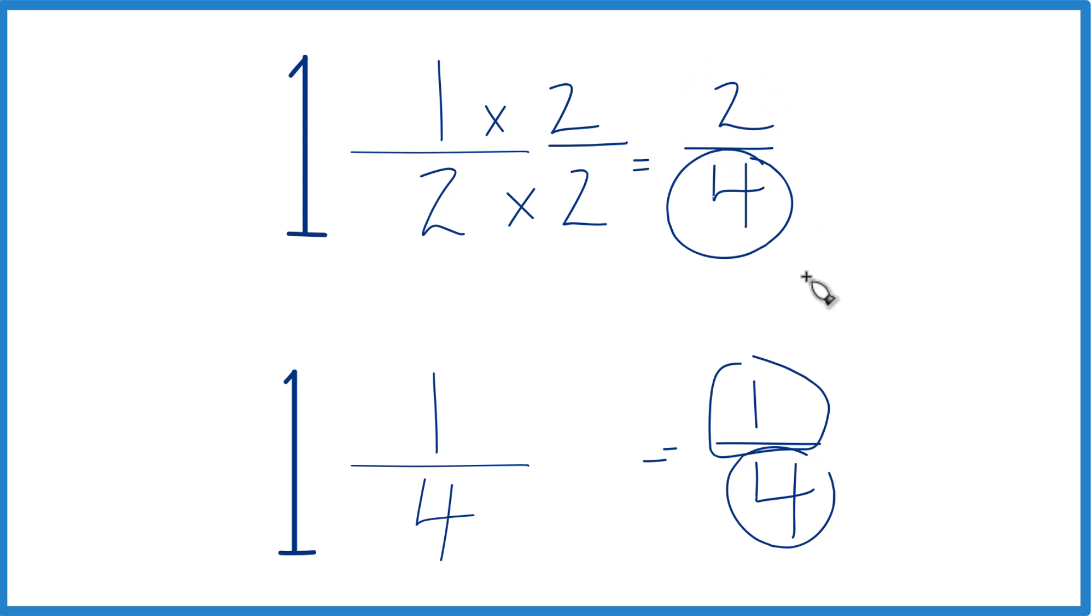We can see that 2, that's greater than 1. So 2 fourths is greater than 1 fourth. And since these are the same, 1 half and 2 fourths, 1 half is greater than 1 fourth.